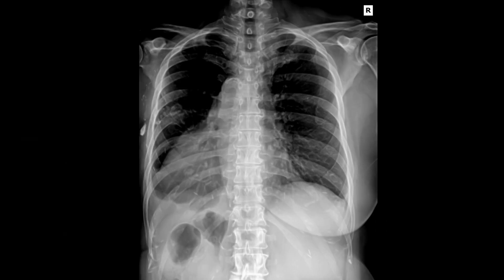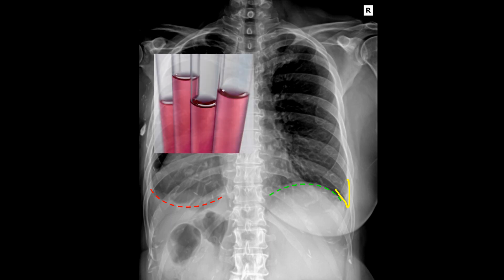Here is a good example of a pleural effusion. The right hemidiaphragm is appropriately shaped with a visible sharp costophrenic angle; however, the left costophrenic angle is blunted with a pleural effusion in the right lower lung field. Similar to fluid in a test tube, fluid in the lungs will cause this characteristic blunting of the costophrenic angle, consistent with a pleural effusion.